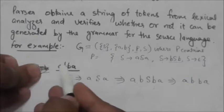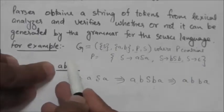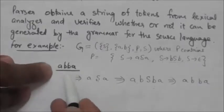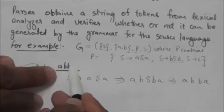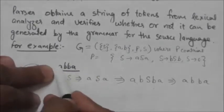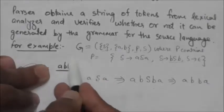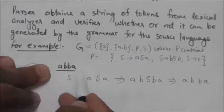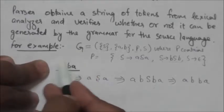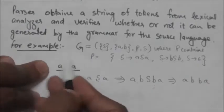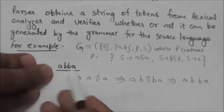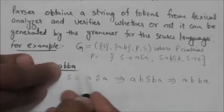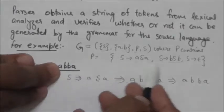We have to do the syntax analysis of this string of terminals a b b a. We need to verify whether this string is generated by this grammar G or not. If it is generated by grammar G, the string of tokens is syntactically correct; if not, it is not syntactically correct.